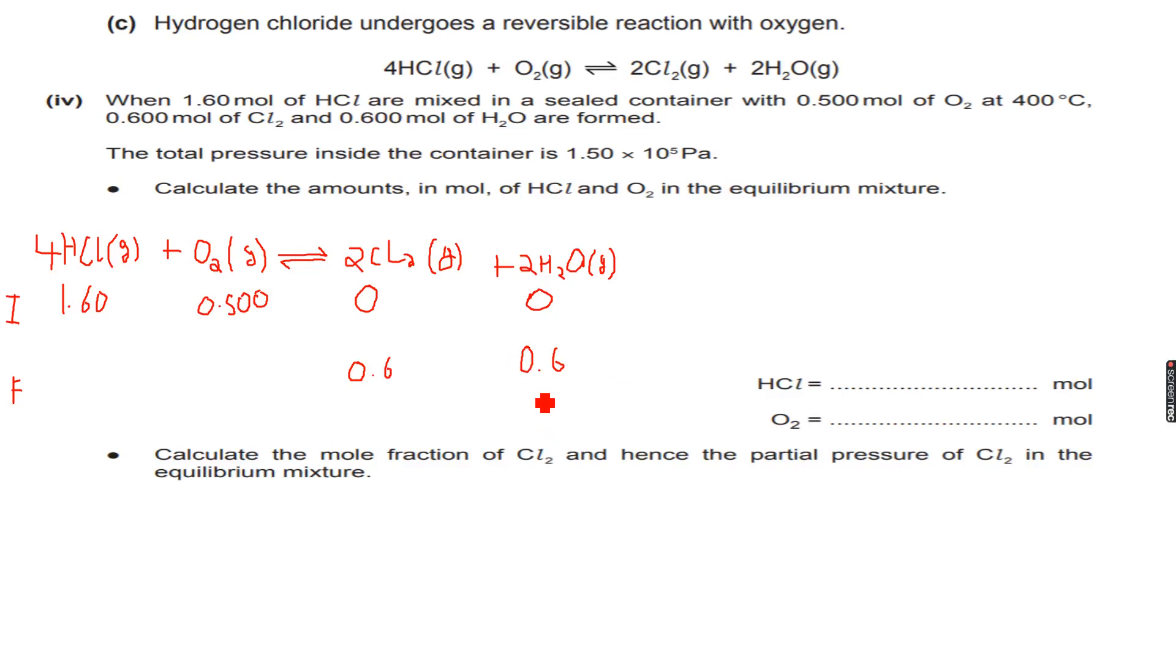0.6 moles of Cl2 and 0.6 moles of H2O finally. I'll write it to 3 significant figures as well. Now, this equation tells me that 4 moles of HCl give me 2 moles of Cl2 and same as H2O because both are 2. So 4 moles of HCl gives me 2 moles of Cl2 or 2 moles of H2O.